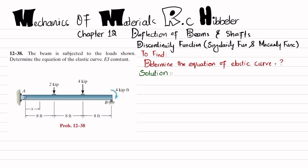Let's start with the solution. First step: if you remove the pin support at point A, you will have a vertical reaction force AY and a horizontal reaction force AX. Similarly, if you remove the roller support at point B, you will have a reaction force RB.